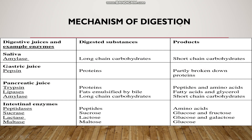Now let us come to the topic: mechanism of digestion. Once the food is taken into the mouth, the salivary glands secrete saliva. The saliva contains an enzyme called salivary amylase, and this salivary amylase will digest carbohydrates into maltose. No protein digestion takes place in the mouth.